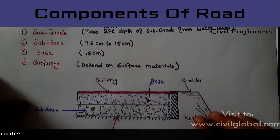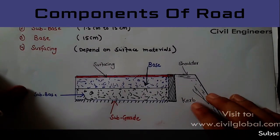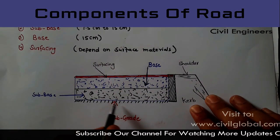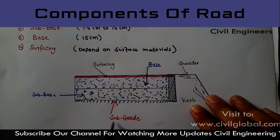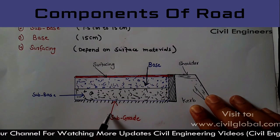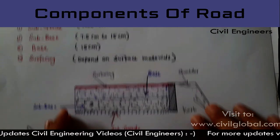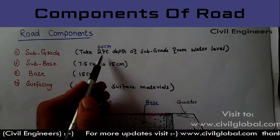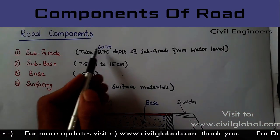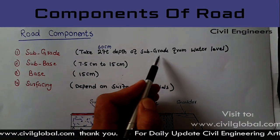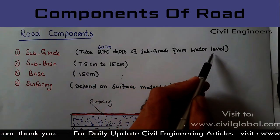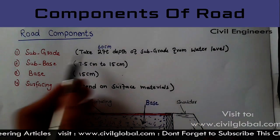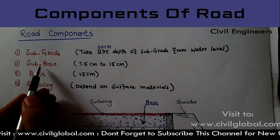The first one is subgrade. In this cross-section area I will show you here what is subgrade. This is the subgrade, which takes 20 feet, means 60 centimeters depth of the subgrade from water level in the road section.